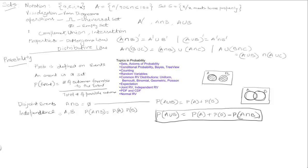This brings us to the idea of conditional probability. Conditional probability is defined as follows: if I'm asking the question, what is the probability of A given that B has already occurred? Then this is the probability of A intersection B under the limited universe of possible outcomes — because we're limiting our universe of possibilities to only B occurring.